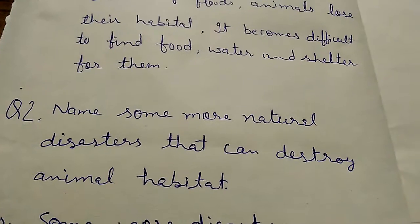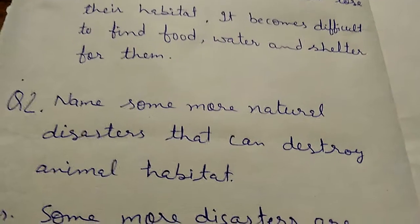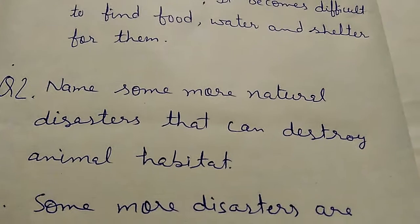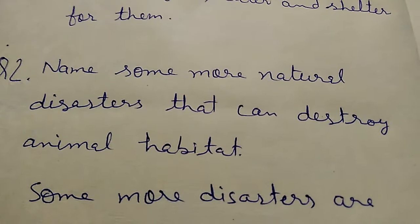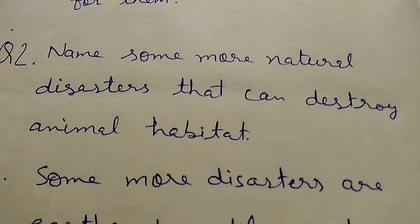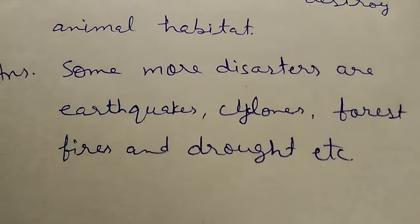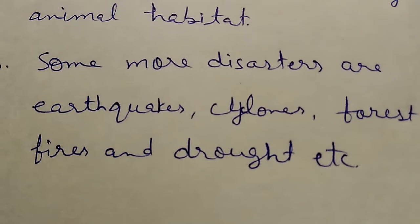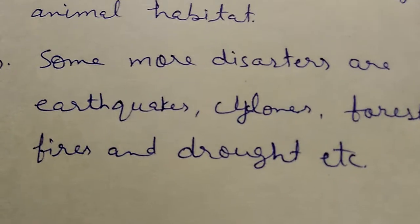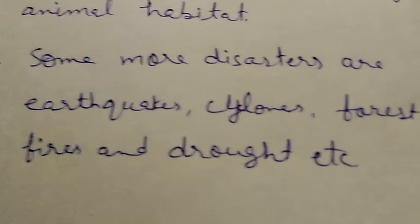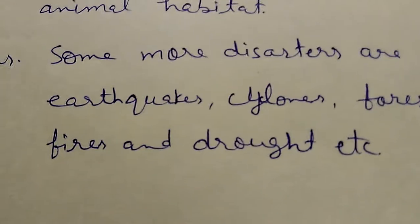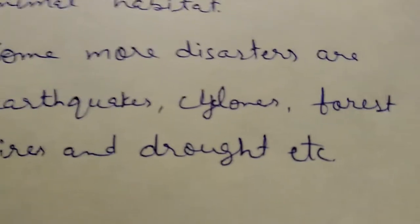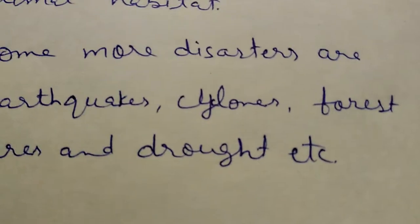Question number 2: Name some more natural disasters that can destroy animal habitat. The answer is some more disasters are earthquakes, cyclones, forest fires and drought etc.